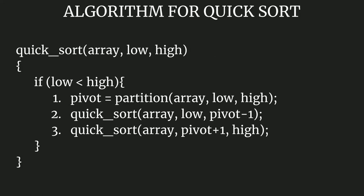The first function is the recursive quicksort. This function takes three arguments: the array itself, low — which stands for the lowest index — and high — which stands for the highest index. In this function, we check whether the value of low is always less than high. If this condition holds, the first task is to get the pivot index — the index at which the pivot element resides — using the partition function, which also takes three arguments: the array, the lowest index, and the highest index.